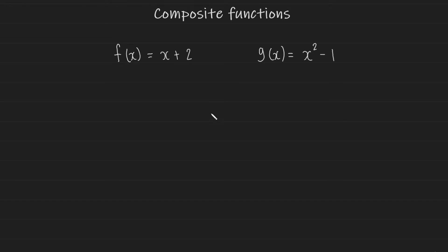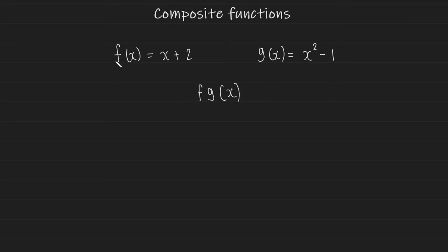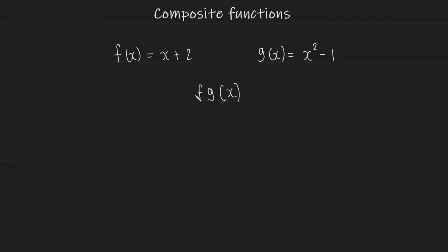Now we're going to look at composite functions. A composite function is essentially one function acting on another function, written as f(g(x)). You can read it as: the function g(x) is being fed into the function f. What does f do to input values? It takes an input x and outputs the input with 2 added. So if we take g(x) = x² − 1 and feed it into f, f takes g(x) which is x² − 1.